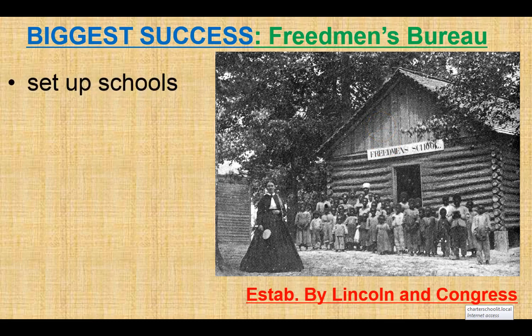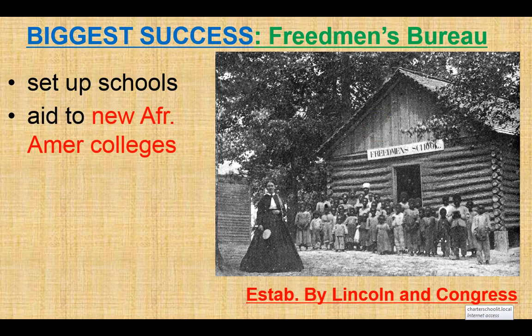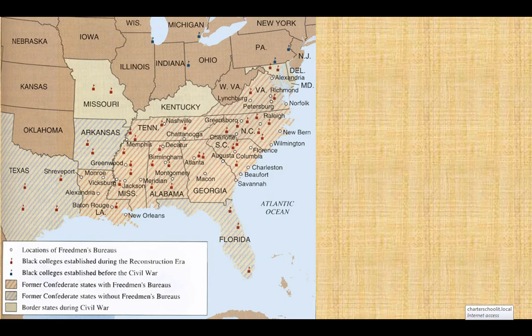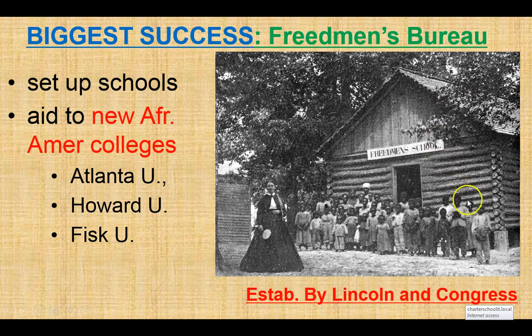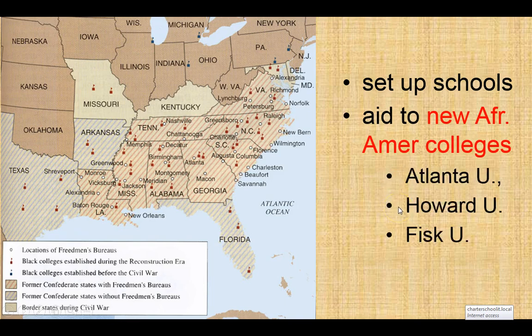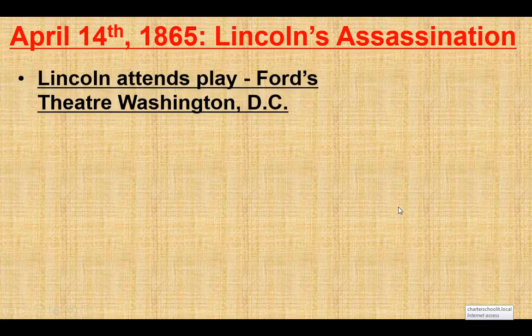The Freedmen's Bureau is really the first example ever of a federal agency being established to help a specific group of people in our history — early-day welfare, in a way. The biggest success of the Freedmen's Bureau — put a big star on this — is that it set up schools, establishing education for African Americans who, by the slave codes, were for generations banned by law from being taught to read and write. This extended into the college system with a vast growth in the number of African American colleges in the South. In pictures of these one-room schoolhouses, you can see adults alongside young children — everybody, from the five-year-old to the 50-year-old, had been equally banned from becoming literate. That's going to change now. This is the longest-lasting, most positive impact of the Freedmen's Bureau.